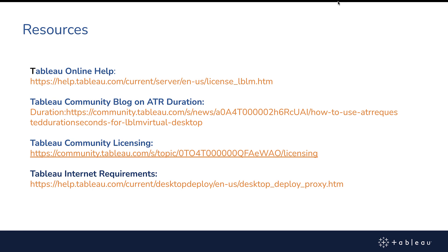Some resources you'll find helpful: for Tableau Online, there is a really good LBLM page including virtual desktop specifications and examples. There is also a community blog on the ATR duration setting covering topics we discussed here. Come visit on the Tableau community under the licensing topic board. And if you need the URLs your network team requires to communicate with the AWS server, just Google 'Tableau Internet Requirements'.